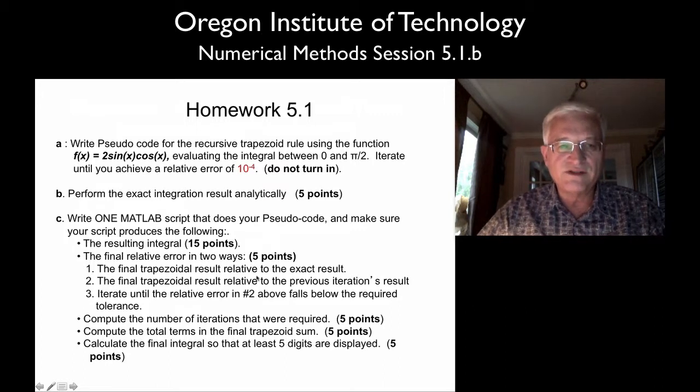Generally you don't get to do that, but in this case you do. So let's see how we're doing relative to the actual integral. Then I want you to use the method we usually use, and that is do a relative error using the last two calculated points. And use number two as your stopping rule and iterate that until you get below 10 to the minus 4th.